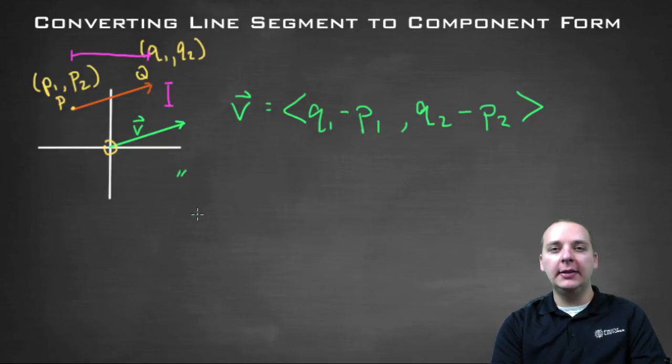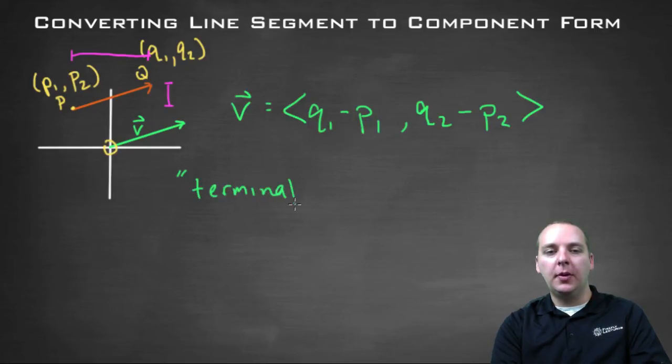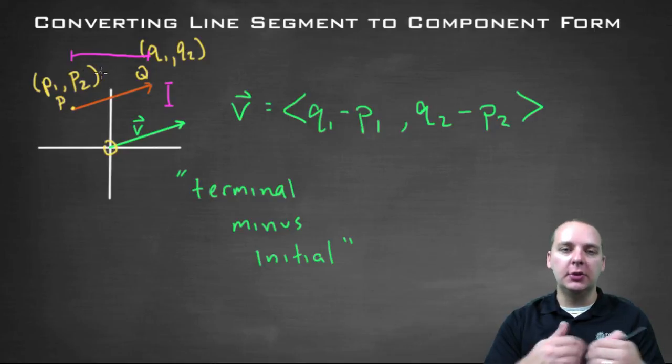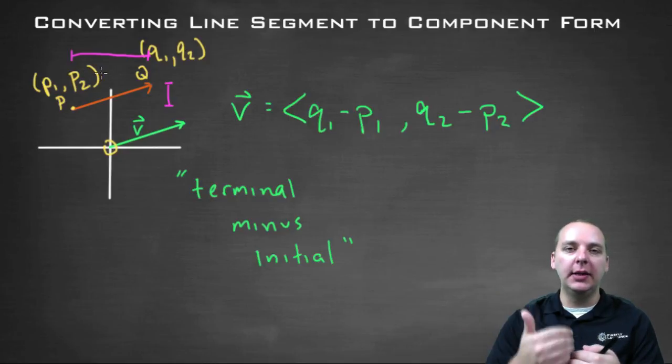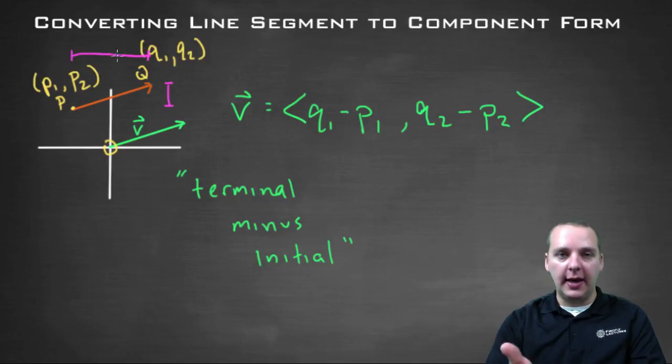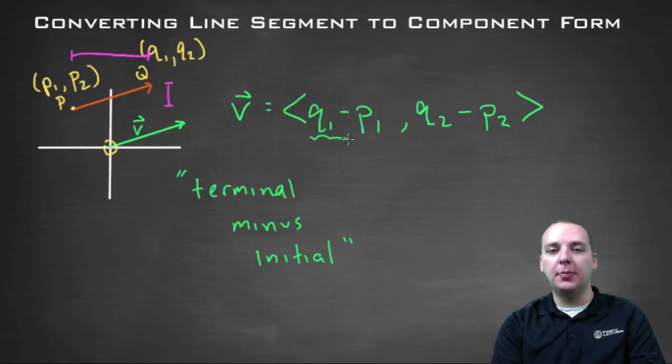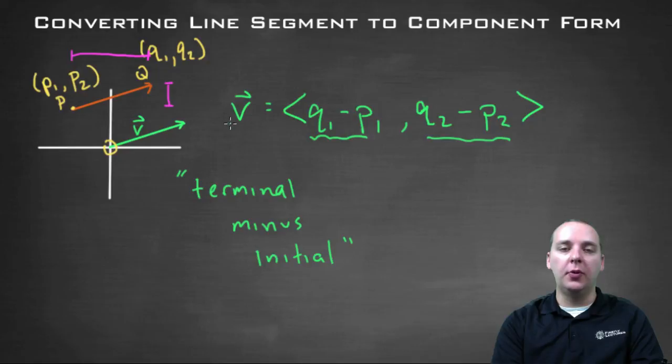A little phrase that will help you remember this is simply the phrase terminal minus initial. Always remember terminal minus initial, ending point minus beginning point, for the X values and for the Y values. And those differences become the first component in your vector and your second component in your vector written in component form. And we'll do an example of this coming up right now.